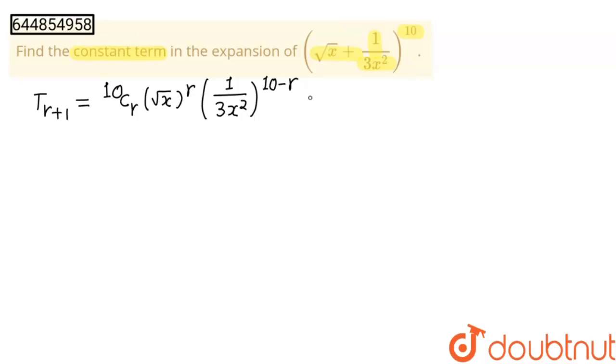So what this will become? This will become 10Cr and this is x to the power r upon 2. And here, when we separate 3 and x squared with degree, this will become 1 upon 3 to the power 10 minus r, into 1 upon x squared to the power 10 minus r.